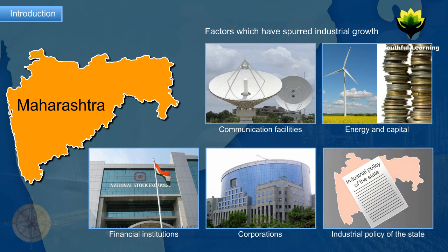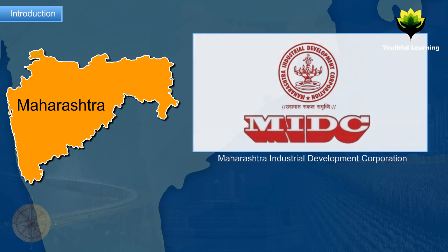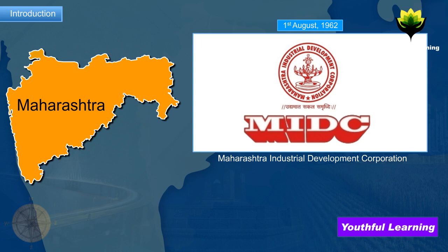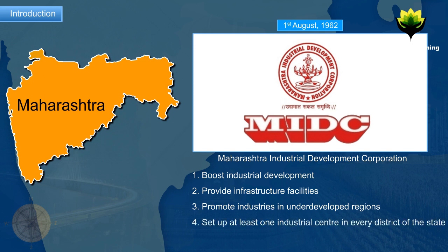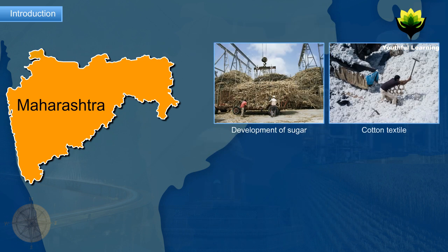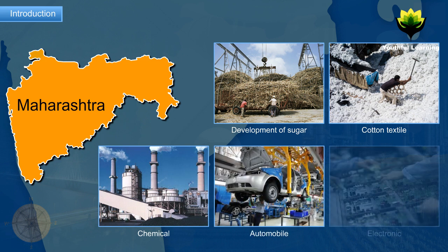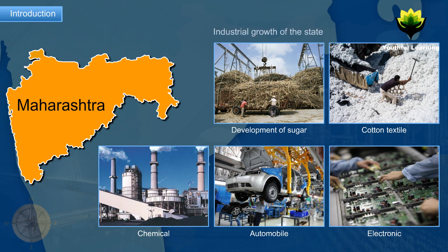Financial institutions, corporations, and the industrial policy of the state have also contributed. The Maharashtra Industrial Development Corporation (MIDC) was established on 1st August 1962 to boost industrial development, provide infrastructure facilities, promote industries in underdeveloped regions, set up at least one industrial center in every district, and achieve regional balance. Development of sugar, cotton textile, chemical, automobile, and electronic industries has led to the industrial growth of the state.